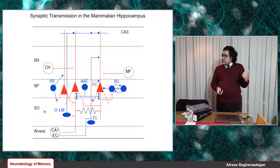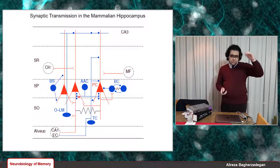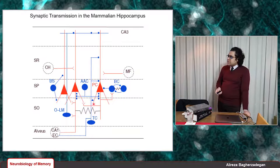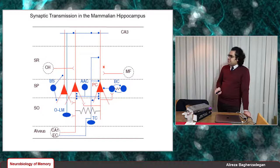Something interesting about OLM cells is that they express somatostatin, used as a molecular marker for these interneurons. Their cell bodies are in the stratum oriens, but they send axons to the stratum lacunosum-moleculare layer — that's why they're called oriens lacunosum-moleculare cells. Their cousins in neocortical microcircuits are Martinotti cells, which also sit in deep layers and send axons to upper layers like layer 1. We also have trilaminar cells, which provide inhibition at the stratum oriens, stratum pyramidale, and stratum radiatum layers.